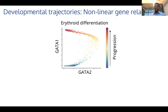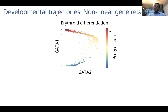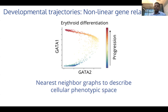One of the most important aspects of developmental trajectory modeling is that gene-to-gene relationships tend to be highly non-linear in nature. Here I'm showing expression of two genes important for this particular trajectory. Each dot is a cell colored by where it is in the progression — blue means early state, red means late state. As you can see, the relationship between these two genes is highly non-linear: GATA2 goes up first and then reduces in expression as cells move forward in progression. Therefore, to accurately capture this non-linear relationship, we use nearest neighbor graphs to describe the cellular phenotypic space.